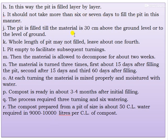The pit is filled till the material is 30 cm above the ground level. The whole length of the pit should leave about one-fourth area unfilled to facilitate subsequent turnings. The material is allowed to decompose for about two weeks, then turned three times: first about 15 days after filling, second after another 15 days, and third at 60 days after filling. At each turning the material is mixed properly and moistened with water. The compost is ready within three to four months after initial filling. The process requires three turnings and six waterings. The compost prepared from this pit size yields about 15 cartloads, and water required is 9,000 to 10,000 liters per cartload of compost.